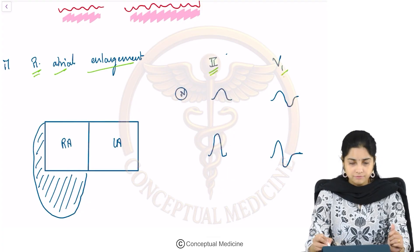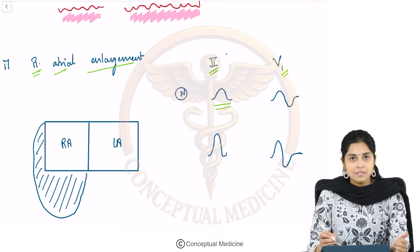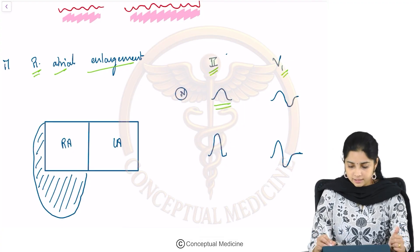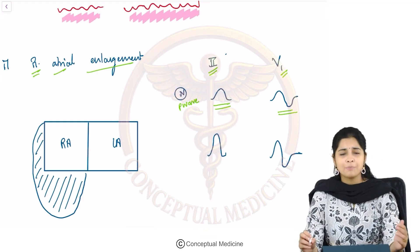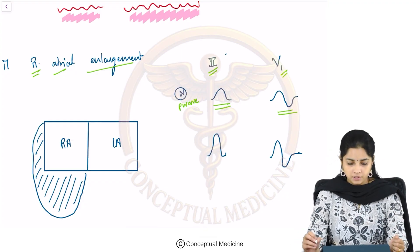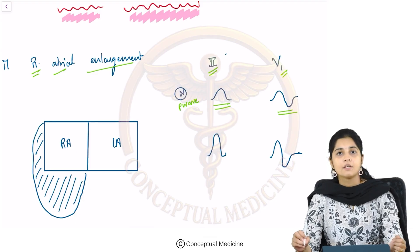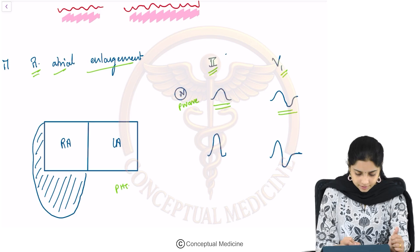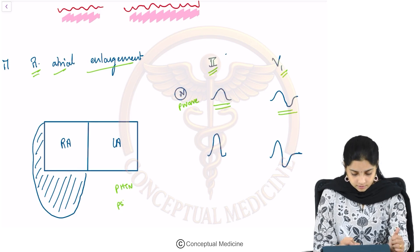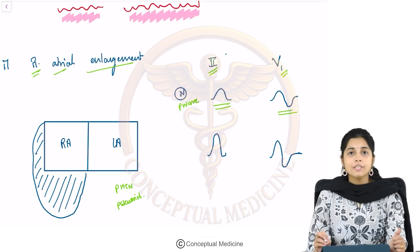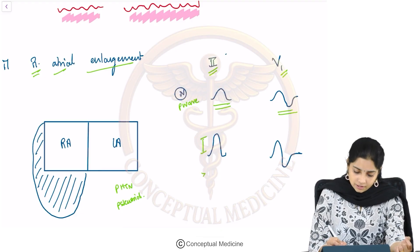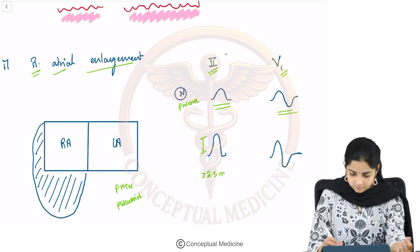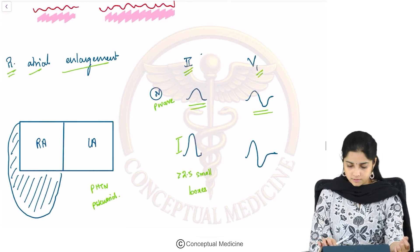That is lead 2 and lead V1. The normal P wave is upright in lead 2 and biphasic in lead V1. Whenever there is a right atrial enlargement — seen in pulmonary hypertension and pulmonary stenosis — the height of the P wave is more than 2.5 small boxes.